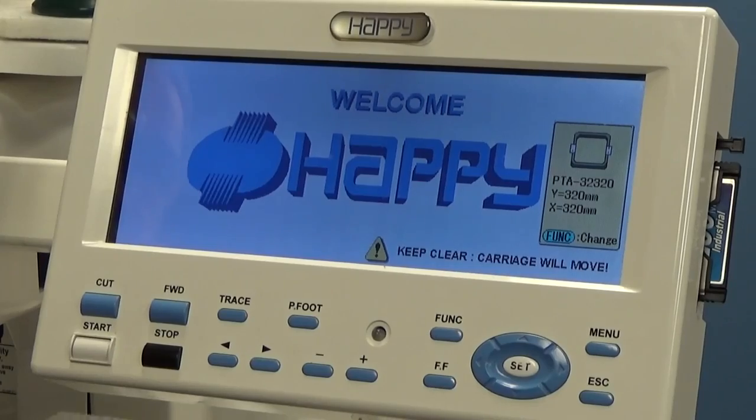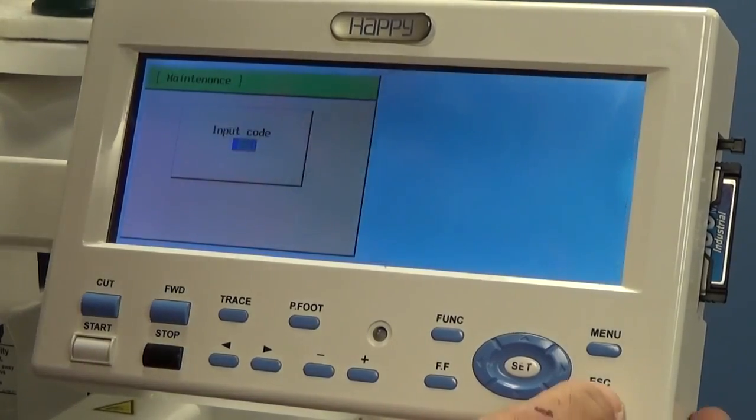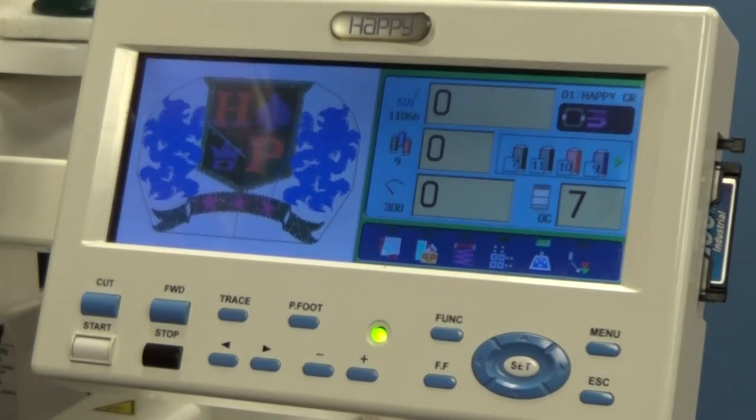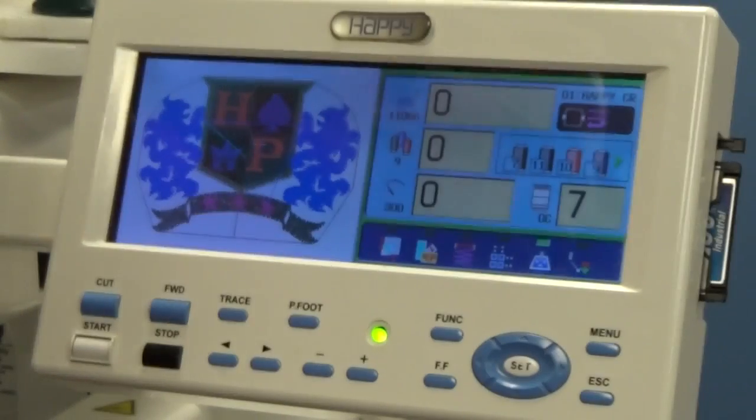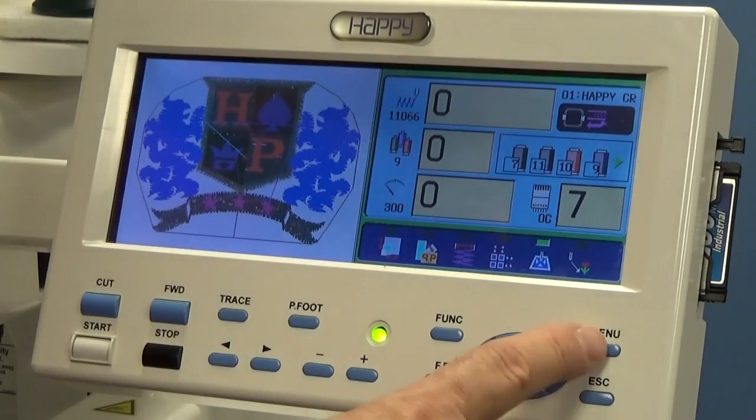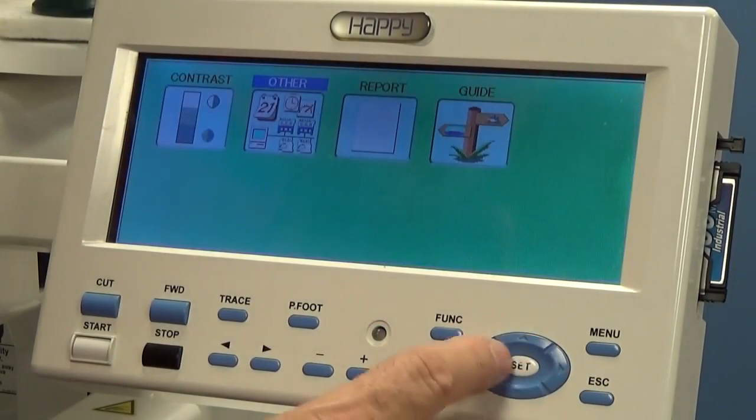Now it's going to come up to the input code. I'm going to go ahead and escape that because like I said, you will not be seeing that until you get the new operating system in. This machine, however, already has a new operating system. So yours is going to look like that when it boots back up. So you'll press menu.